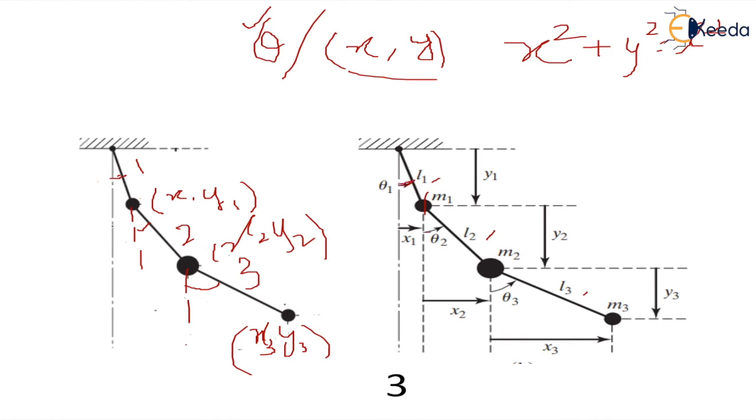So it will have one, two and three degrees of freedom. It may be in terms of angle theta 1, theta 2, theta 3 or maybe x1, x2, x3 or maybe y1, y2, y3. So any one of them - either theta or x or y, but not both x and y because they both are dependent on each other.